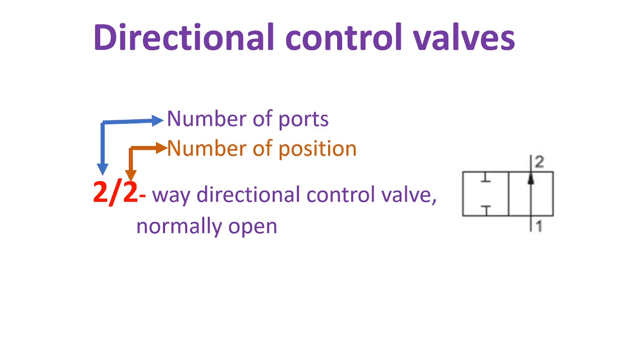This is one example of directional control valves. The first letter represents the number of ports and the second letter represents the number of positions. This valve is a 2/2-way directional control valve, normally open.